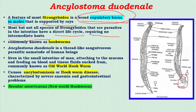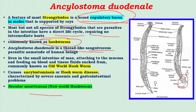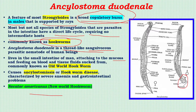These parasites have a direct life cycle with no intermediate host. All these parasites are known as hookworms. Ankylostoma duodenale is a sanguivorous thread-like parasite — a nematode found in the small intestine of human beings. It remains attached to the mucosa, feeds upon blood and tissue fluid, and is commonly known as the Old World hookworm. It causes hookworm disease characterized by severe anemia and gastrointestinal problems.